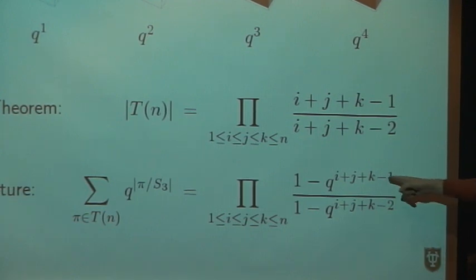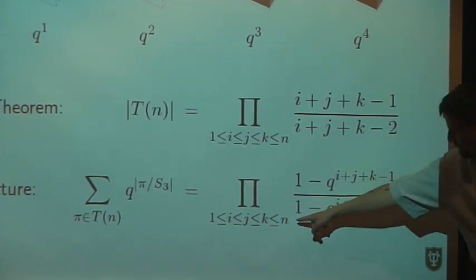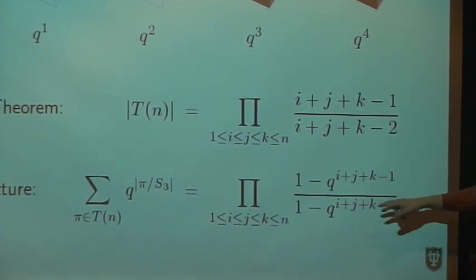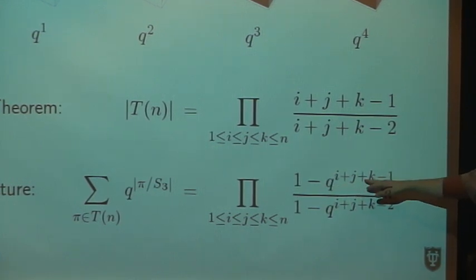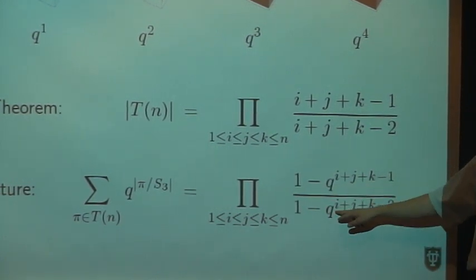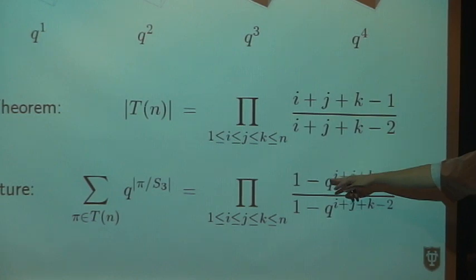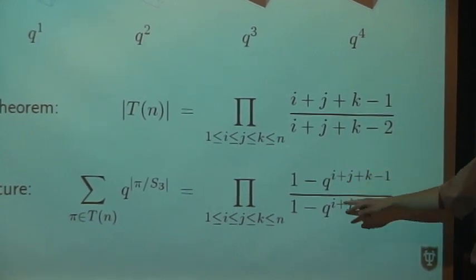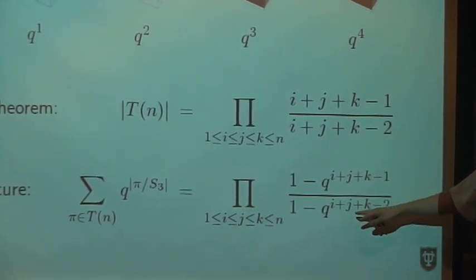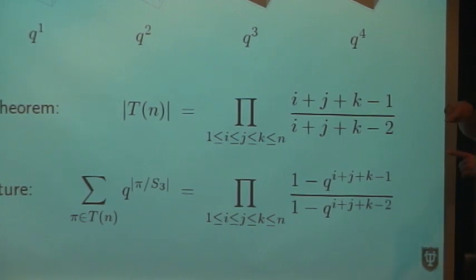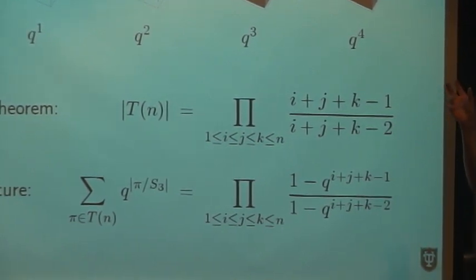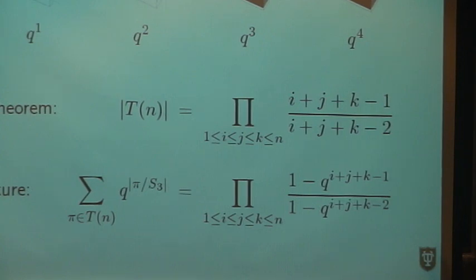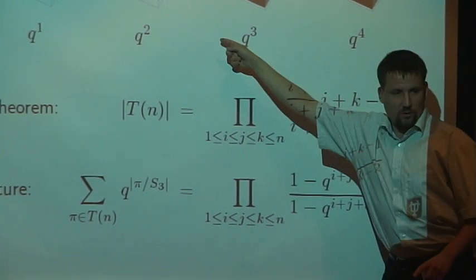If we plug in n equals two, we get here one minus q squared over one minus q, and then we get one minus q cubed divided by one minus q squared. Everything cancels out, and in the end we get one minus q to the five divided by one minus q, and we get this polynomial.